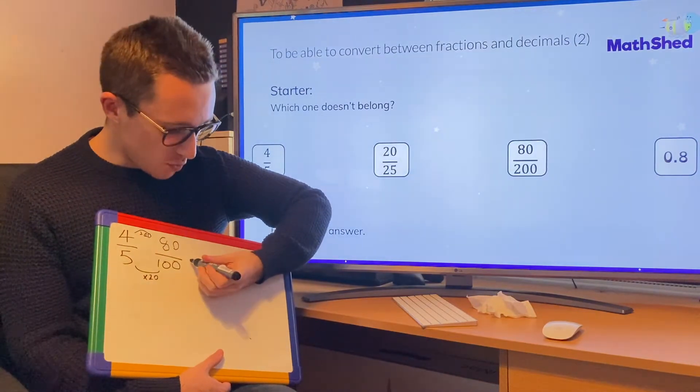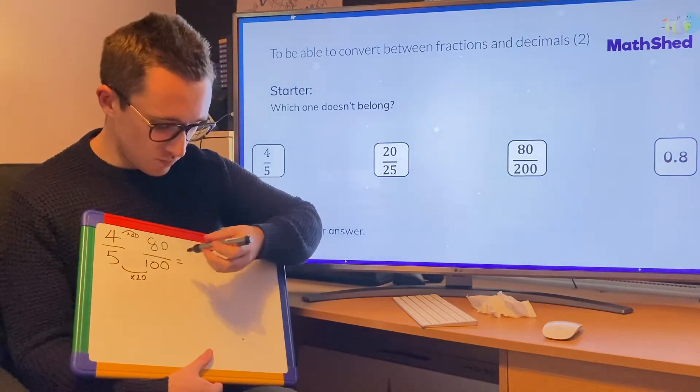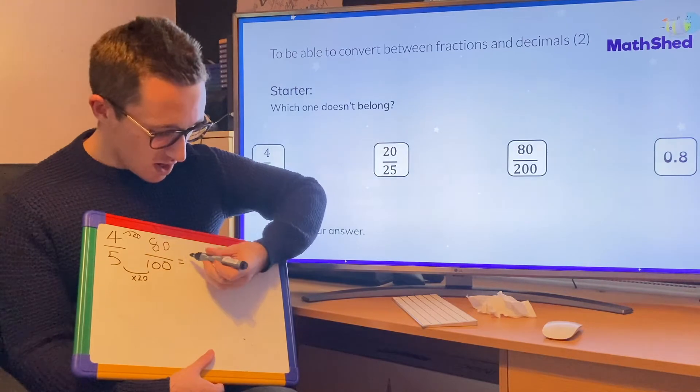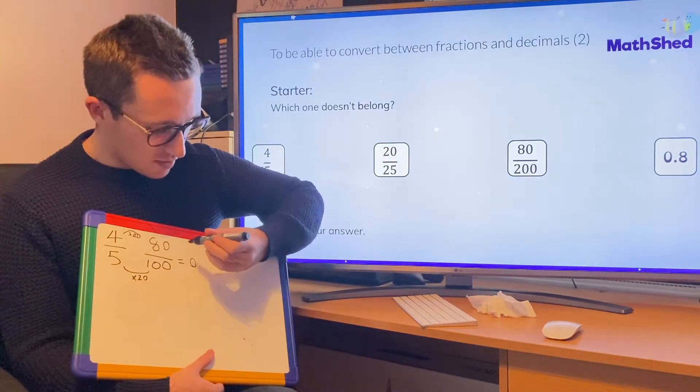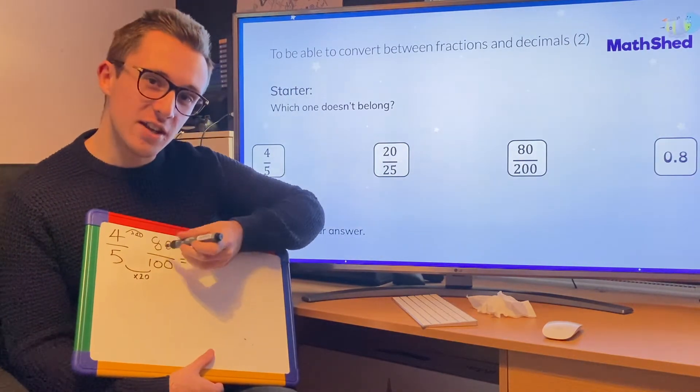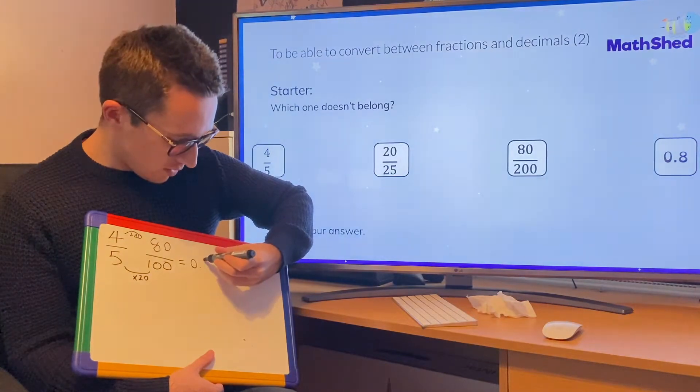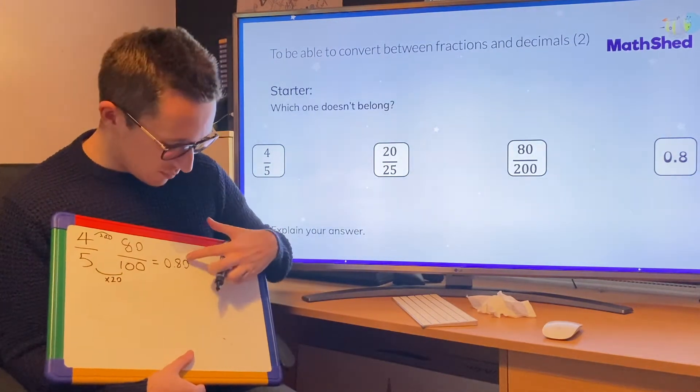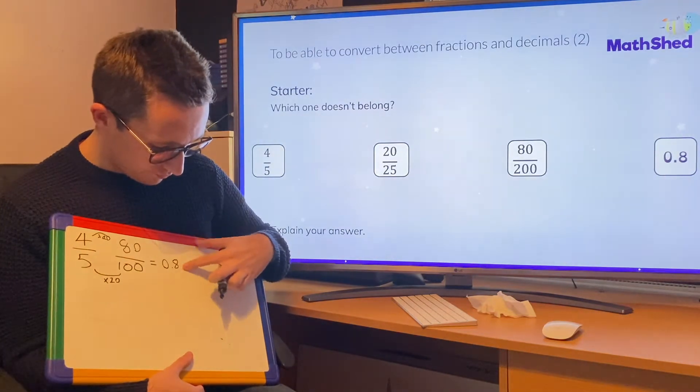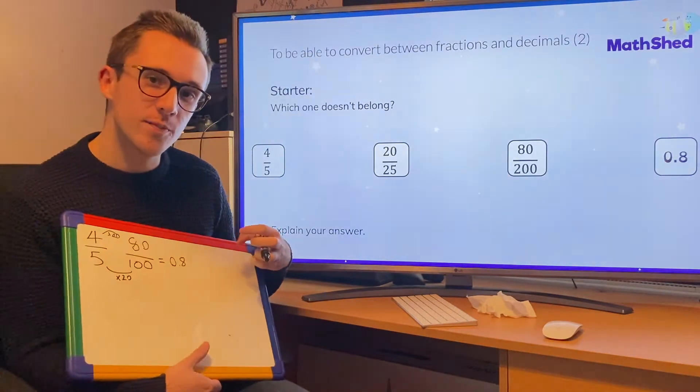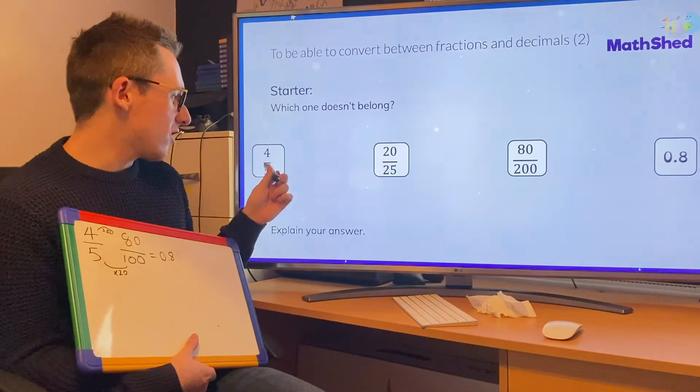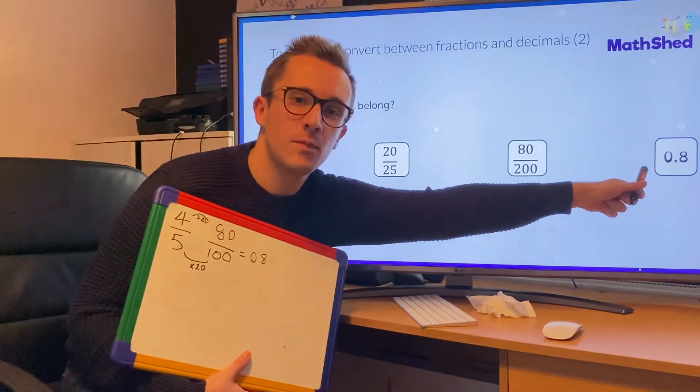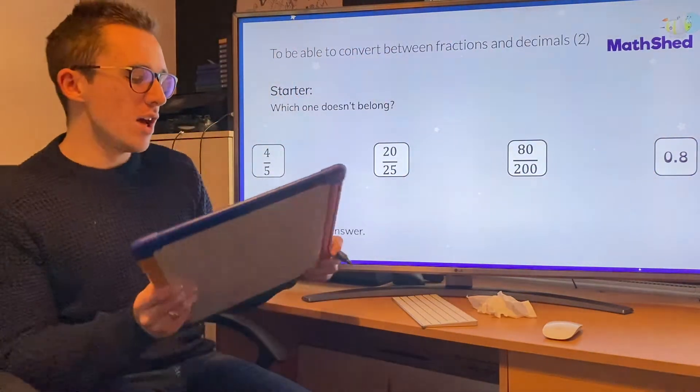And now I'm going to turn that into a decimal. I know from yesterday that it would be 0 point and then we take the numerator. So it's 0 point 80, but we don't need to put the zero at the end, so it's just 0.8. I can tell straight away that this is the same as this.